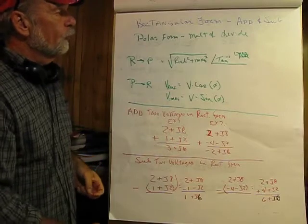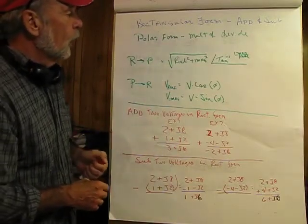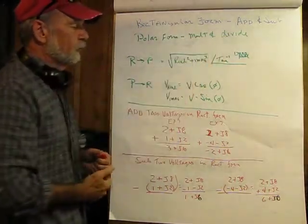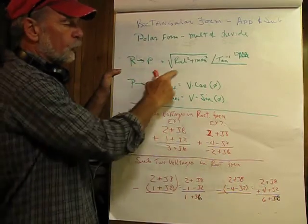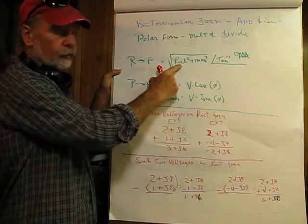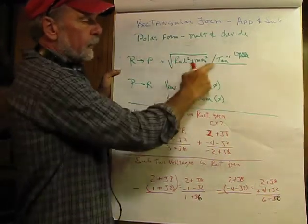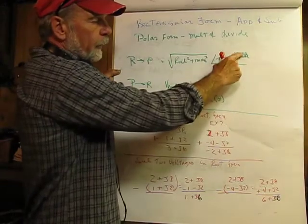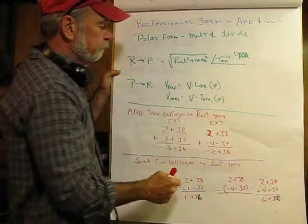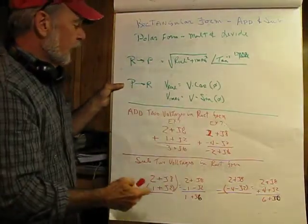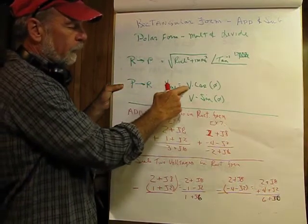We can apply this technique to any periodic waveform that we can decompose into a series of sine waves. We do the math on each sine wave and, by the principle of superposition, add them back together. Rectangular form is good for adding and subtracting; polar form is good for multiplying and dividing. A rectangular-to-polar conversion is the square root of the real value squared plus the imaginary value squared, and the angle is the inverse tangent of the imaginary divided by the real. Polar-to-rectangular: the real component is the voltage times cosine of the angle; the imaginary is the voltage times sine of the angle.